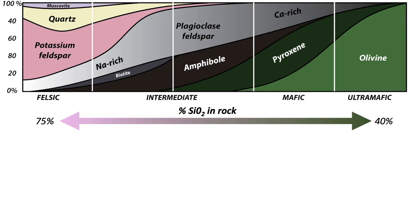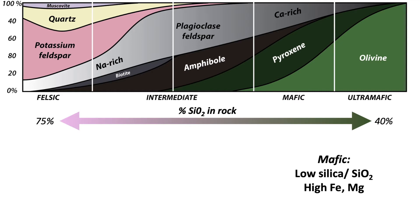In general, the composition of an igneous rock is based on the amount of silica present. Rocks with a low amount of silica and high amounts of iron and magnesium are classified as mafic to ultramafic. Rocks with high amounts of silica and other elements like potassium, sodium, and aluminum are considered felsic.